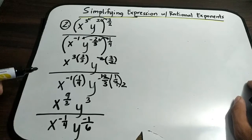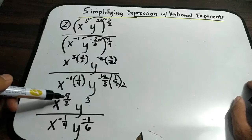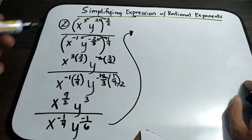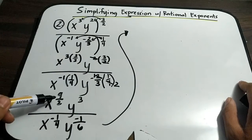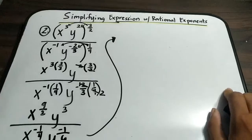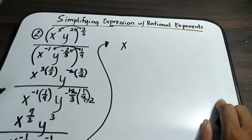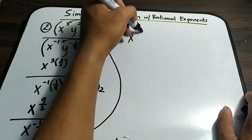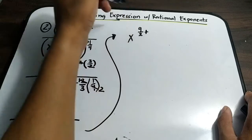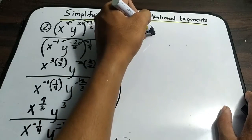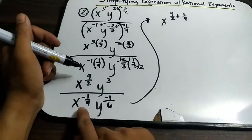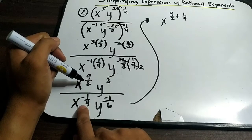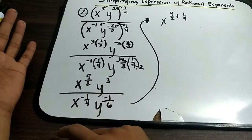This is not yet the final answer because we still have negative exponents. To simplify further, subtract the exponents of x and y. We have x raised to 9 over 2 minus negative 1 over 4. Since we have a negative sign, it becomes 9 over 2 plus 1 over 4. As you know, when you multiply negative by negative, the answer is positive.